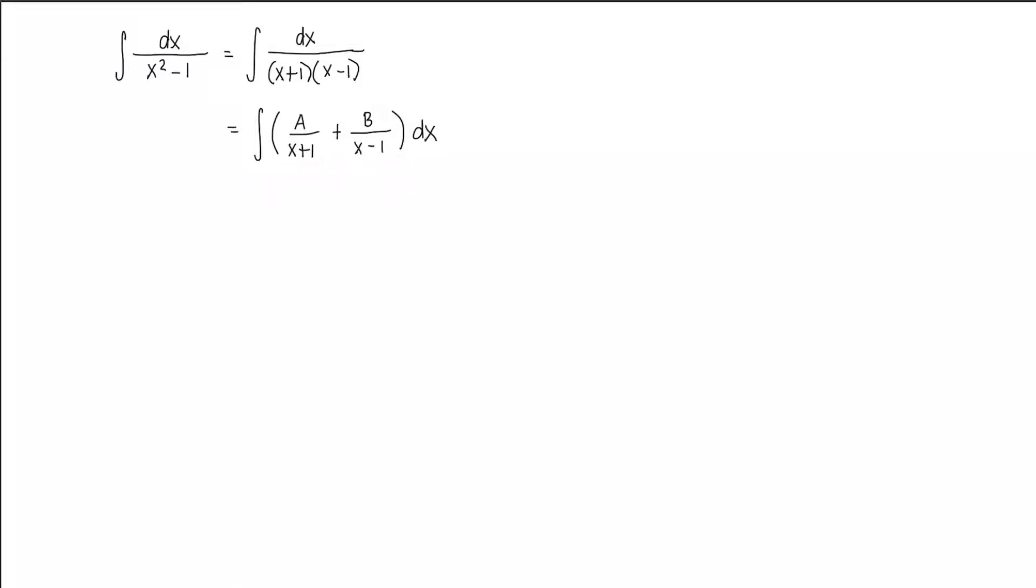Now, to solve for the values of the constants a and b, let's write it here. Let us solve for a and b. The fraction 1 over x plus 1 times x minus 1 is equal to a over x plus 1 plus b over x minus 1.